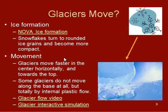Glacier movement: glaciers move faster in the center and towards the top. Some glaciers don't actually move on the base at all — they flow internally. Because the ice is almost frictionless, the ice can actually flow against itself and fracture at the bottom of the glacier.